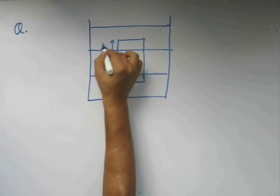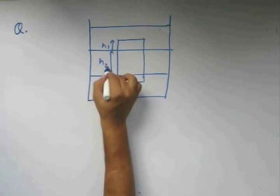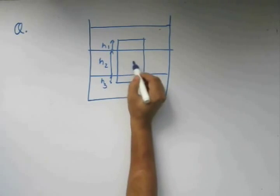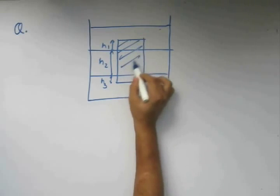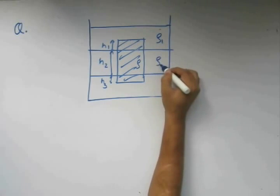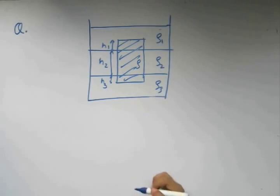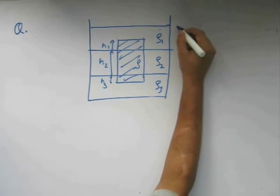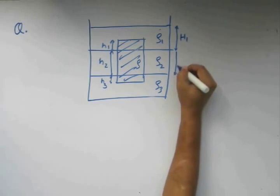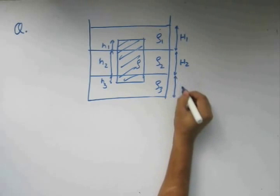Say this height is h1, this height is h2, this height is h3. The density of this body is rho, this is rho1, rho2, and rho3, the densities of the three liquids. Say this height is H1, H2, and this is H3.